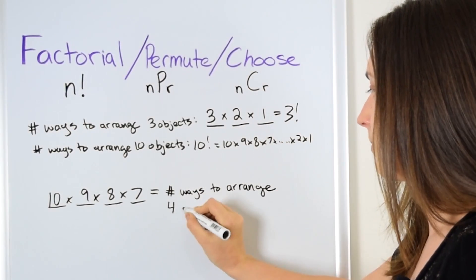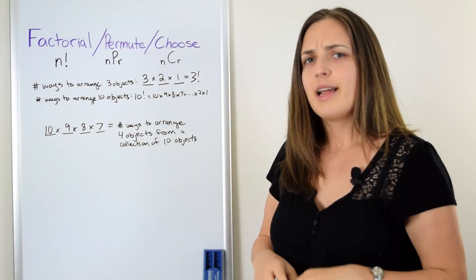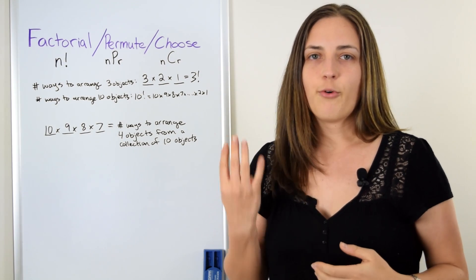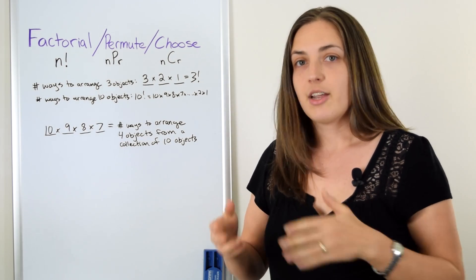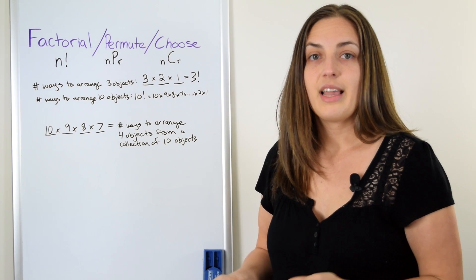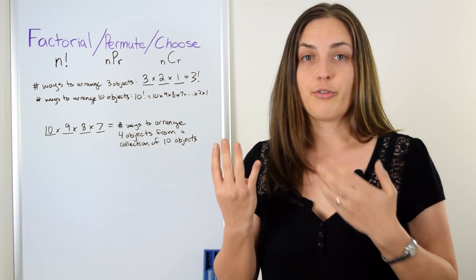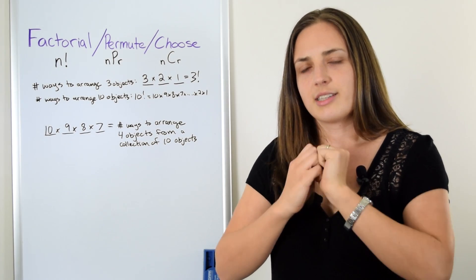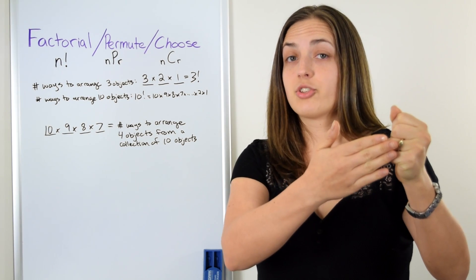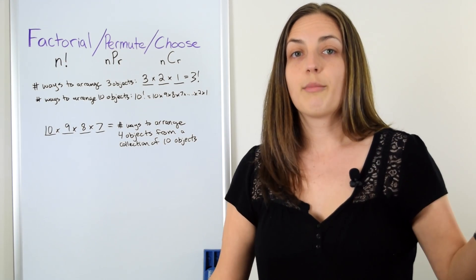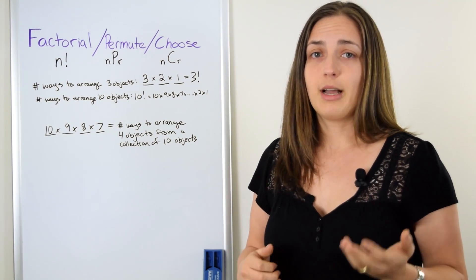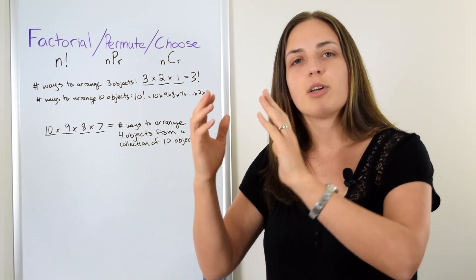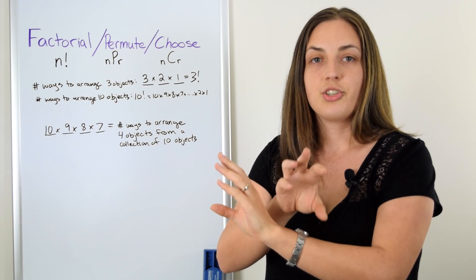So this is the number of ways to arrange 4 objects from a collection of 10. You might wonder why we're multiplying. Think about an easy example: what you're going to have for breakfast. Let's say you have 4 types of bread and 2 types of jam and you want to make toast with jam. You have 4 choices for your first task, followed by 2 choices for your next task. You can think of it as a decision tree — the total number of outcomes is 4 times 2, which is 8. In general, for a series of tasks, multiply the number of ways to do each task.